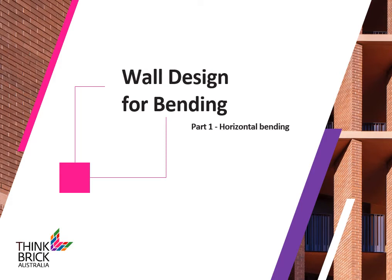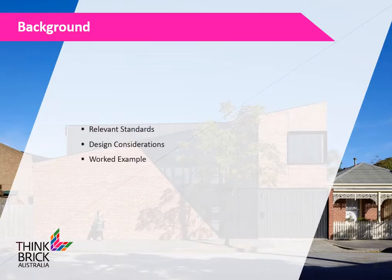Welcome everyone to Part 1 of Wall Design for Bending, presented on behalf of ThinkBrick Australia. This is the first part of the Wall Design for Bending series, covering horizontal bending. This presentation will go through relevant standards such as AS3700 Masonry Structures, outline the design considerations for horizontal bending, and also go through a worked example for a brick wall.